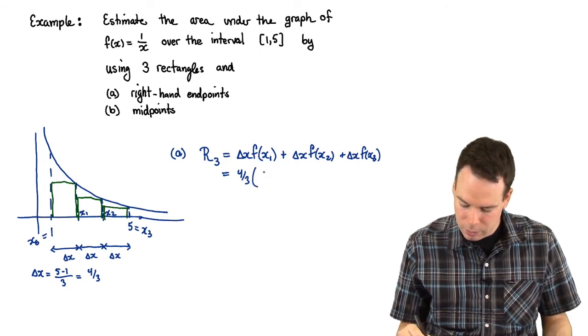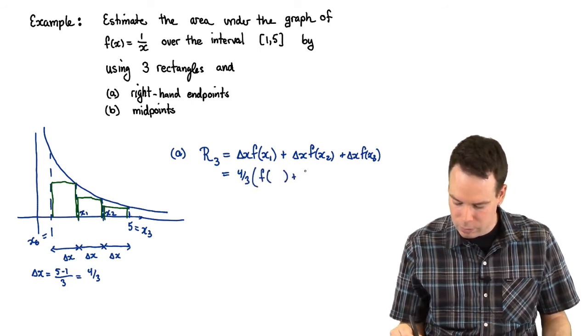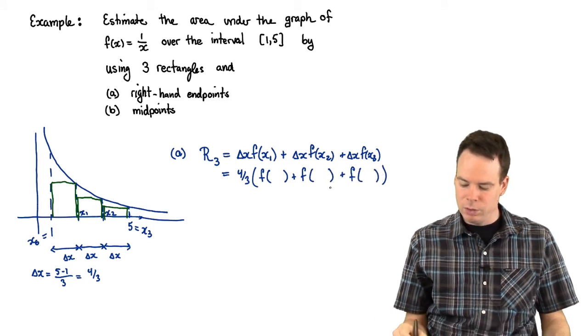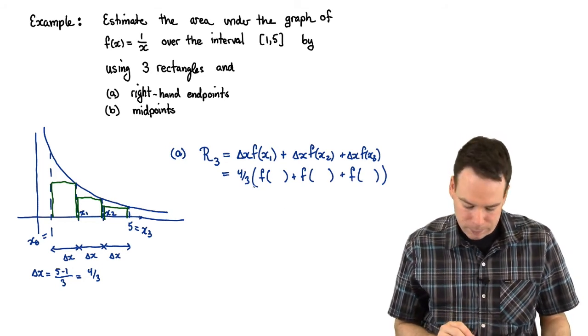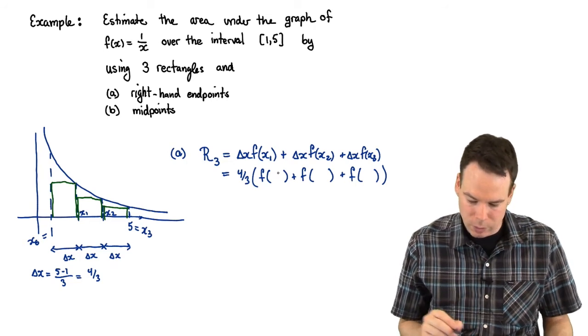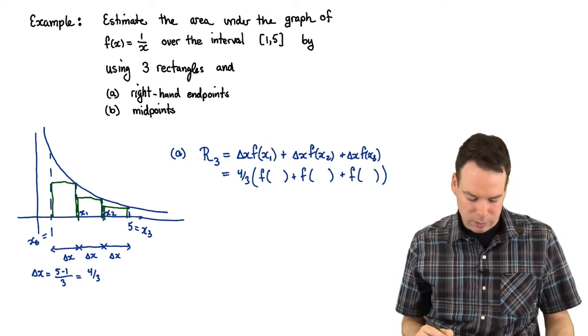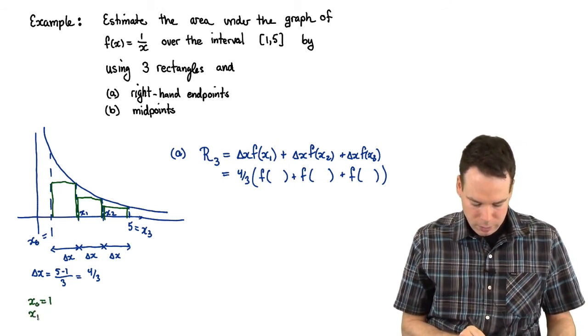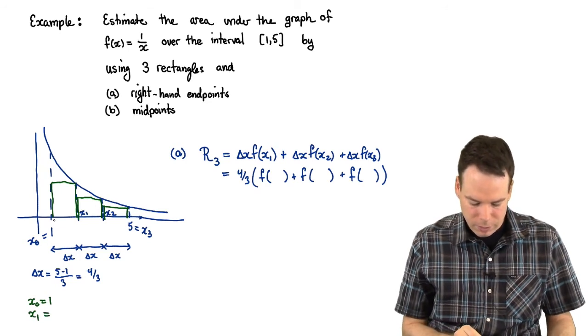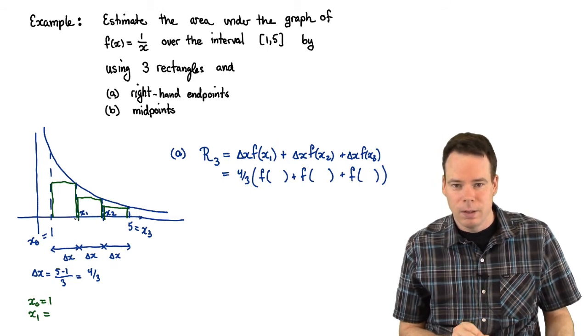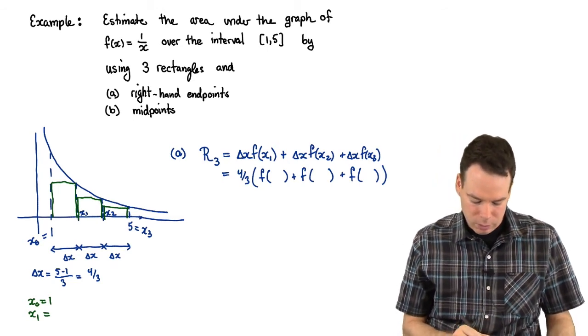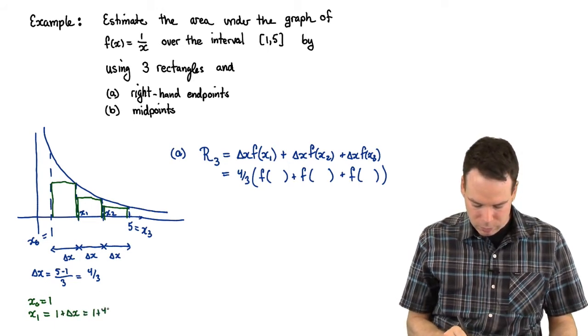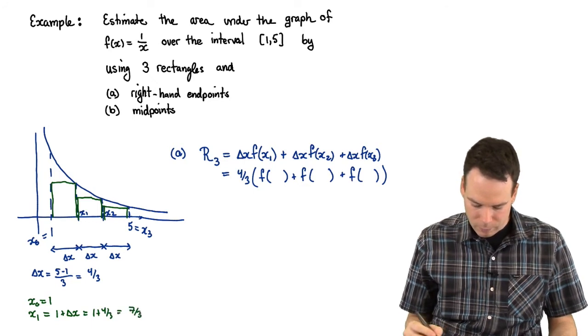Now what I need is to know the function values at x1, x2, x3. In other words, I need to know what x1, x2, x3 are. x0 is 1. What is x1? Well, x1 we can get by starting at x0 and then just moving over delta x units. If I move over delta x units, I get to x1. So that would be 1 plus delta x, or in other words, 1 plus 4 thirds, or in other words, 7 thirds. So that's 7 thirds.